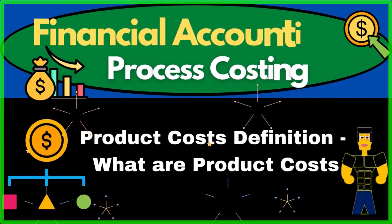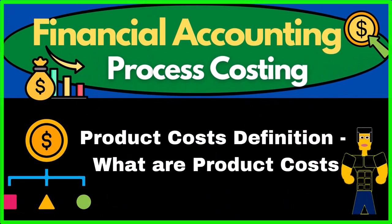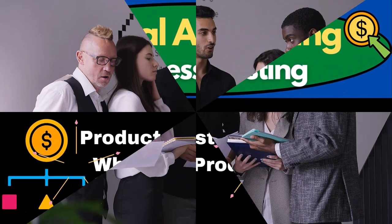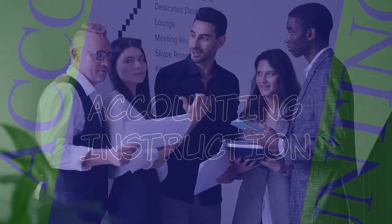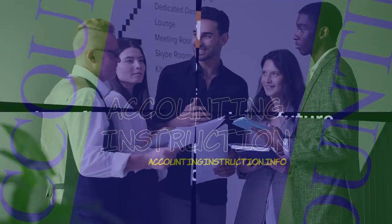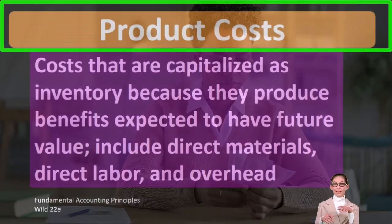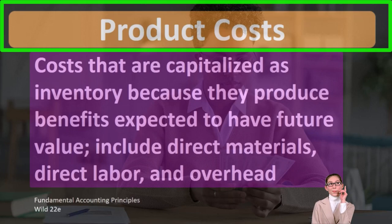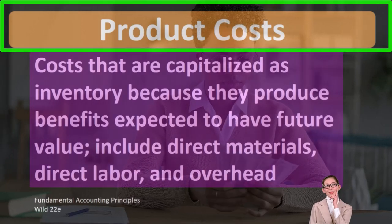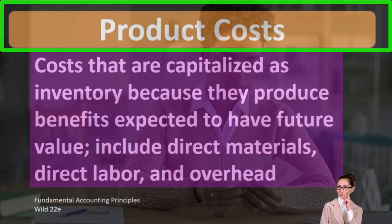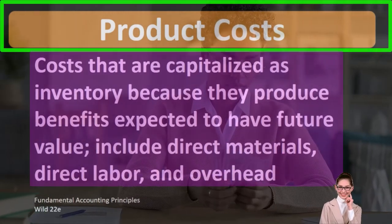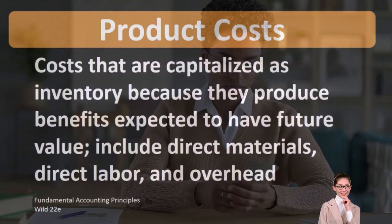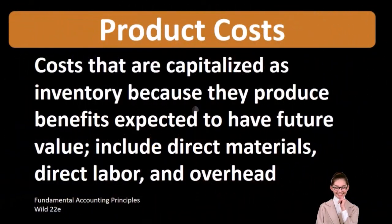Hello. In this lecture we will define product costs. According to Fundamental Accounting Principles, Wild 22nd Edition, product costs are costs that are capitalized as inventory because they produce benefits expected to have future value. They include direct materials, direct labor, and overhead.